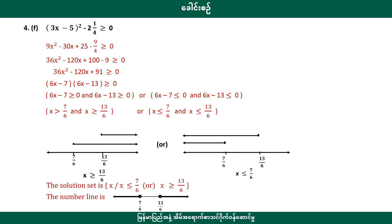Now we have 30 minus 38, and we have 30 minus 25 minus 9 minus 4. We have 80. Now we have 4 of the equation, so the equation is 4. 36a squared minus 128 plus 100 minus 9. Now we have 36a squared minus 128 plus 91. And we have the equation: x greater than or equal to 7 by 6, and x less than or equal to 13 by 6.